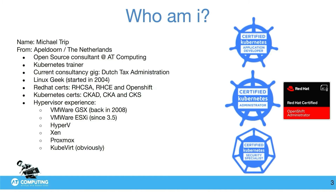Who am I? My name is Michael Tripp, I'm from Appleton, the Netherlands. I'm an open source consultant at AT Computing. I'm a Kubernetes trainer — I give a few types of Kubernetes courses, a bit more fundamentals, a bit more advanced. I currently work at the Dutch tax administration where we do OpenShift stuff.